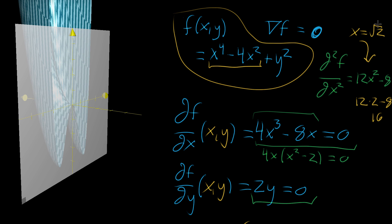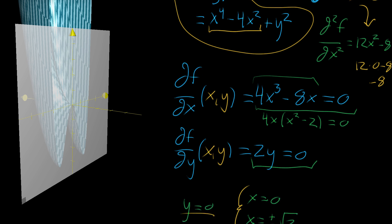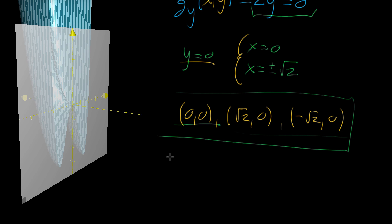If instead we plug in x = 0, we get 12(0) − 8 = −8. Because you have a negative value, that gives negative concavity on the graph, which is why — as far as x is concerned — the origin looks like a local maximum. So writing that down: from the x perspective, the origin looks like a max, and the other two points look like minima.